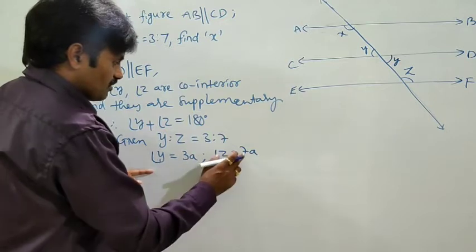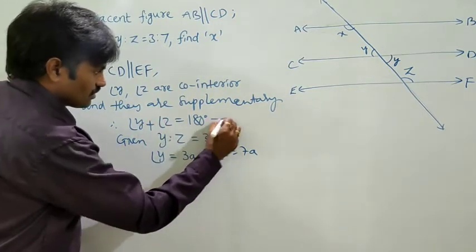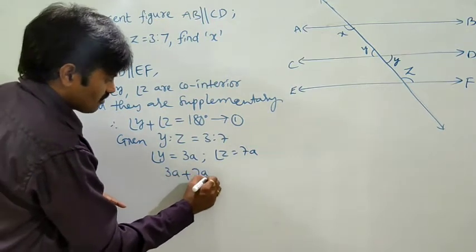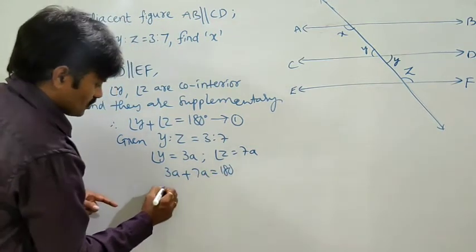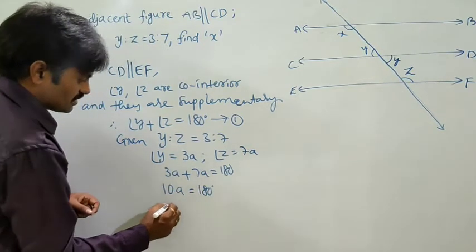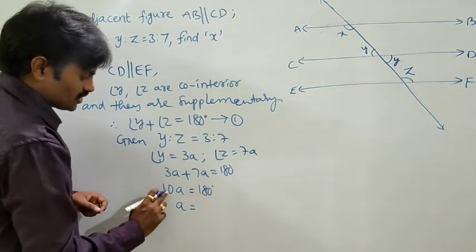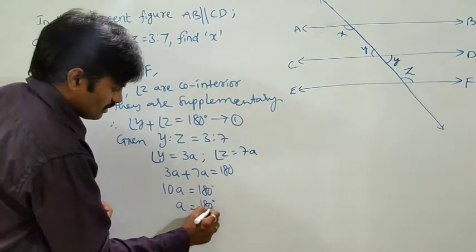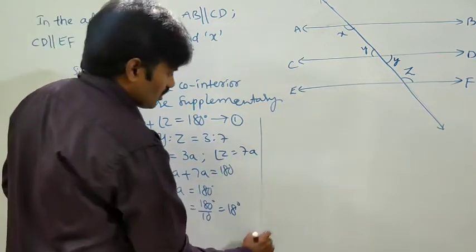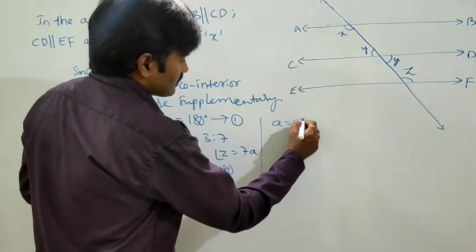Substitute in equation 1: 3A plus 7A is equal to 180 degrees. From here, 10A is equal to 180 degrees. So A is equal to, if we shift 10 to other side, 180 by 10, that is 18 degrees. So the value of A is 18 degrees.